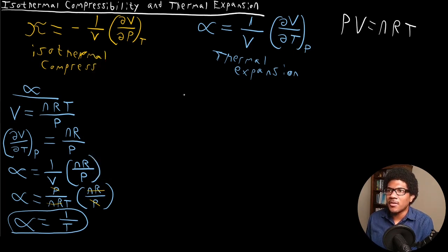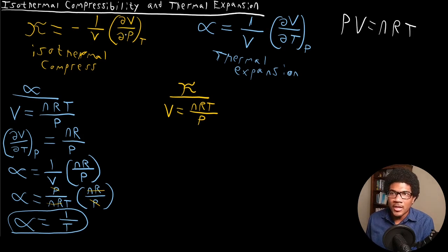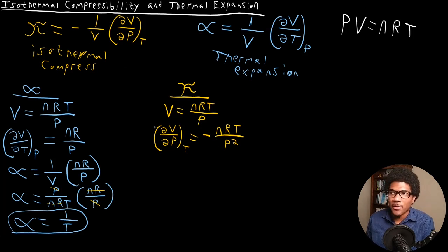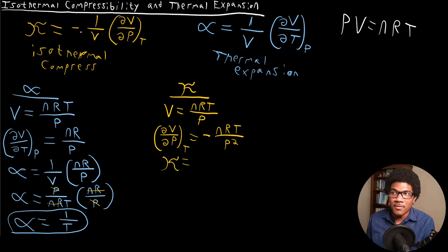Now let's do the isothermal compressibility for kappa. Again, we need the volume expression V = nRT/P, but here we take the derivative of volume with respect to pressure: dV/dP at constant T. Since we're taking the derivative of 1/P, that's negative nRT/P². Plugging this into our expression for kappa — with the negative sign out front — the two negatives cancel, leaving us with (1/V)(nRT/P²).